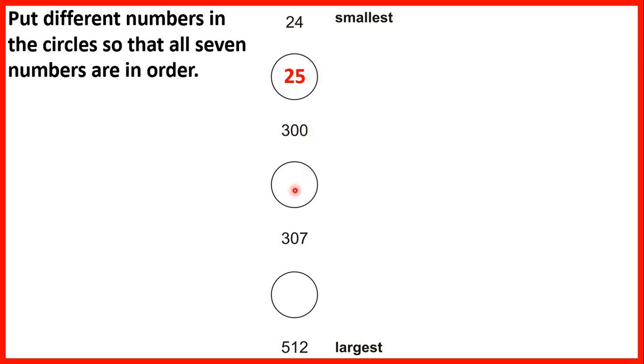Now we need a number between 300 and 307, so we could have 301. And here we need a number between 307 and 512, so we could have 308. But again, there are lots of possible different answers here.